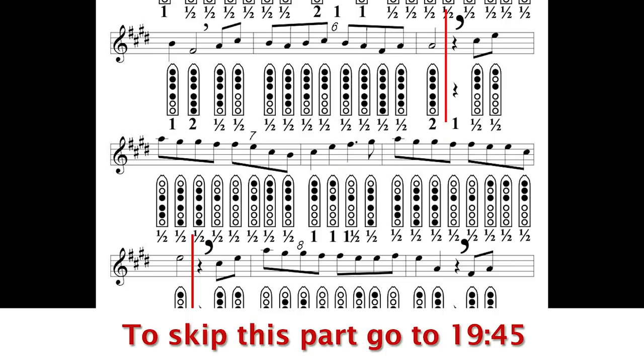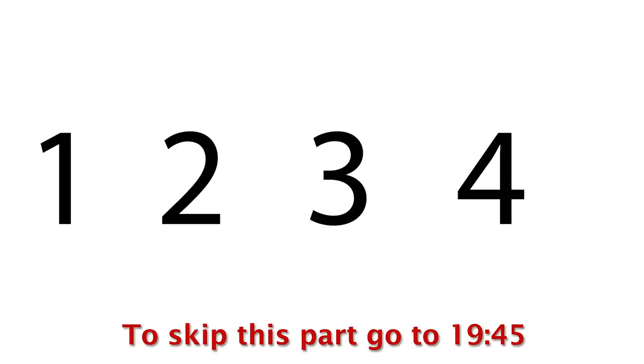A measure of music is from this line to this line — that's one measure, and each measure gets four beats. So if you're just counting the on beats, it sounds like: one, two, three, four. One, two, three, four.